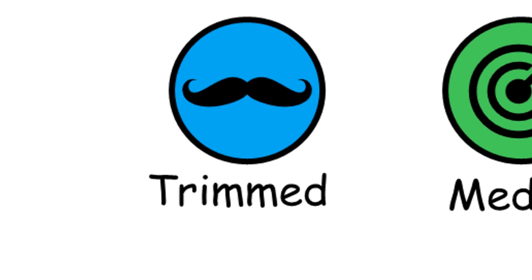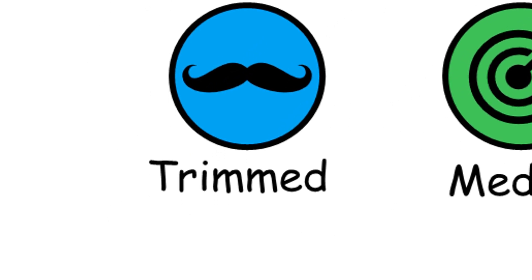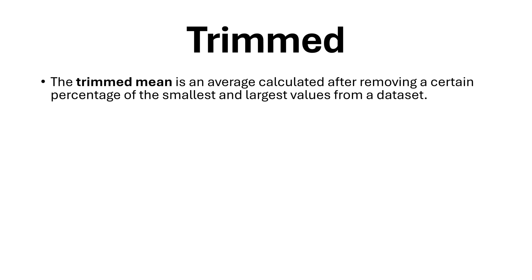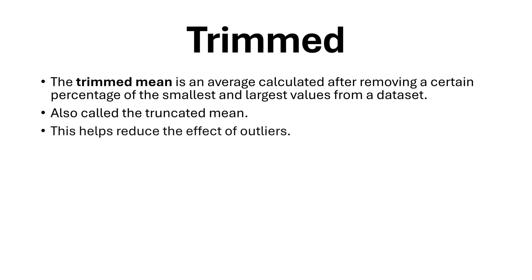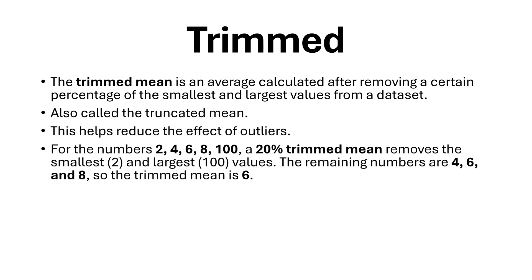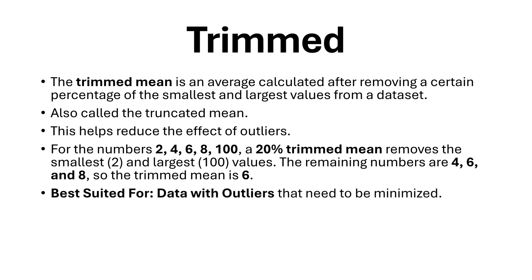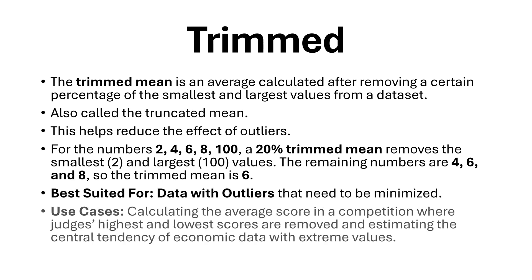Trimmed mean. The trimmed mean is an average calculated after removing a certain percentage of the smallest and largest values from a dataset, also called the truncated mean. This helps reduce the effect of outliers. For the numbers 2, 4, 6, 8, 100, a 20% trimmed mean removes the smallest (2) and largest (100) values. The remaining numbers are 4, 6, and 8, so the trimmed mean is 6.